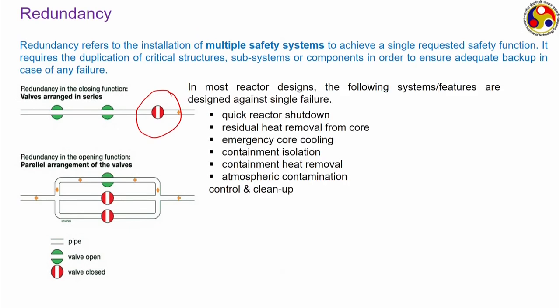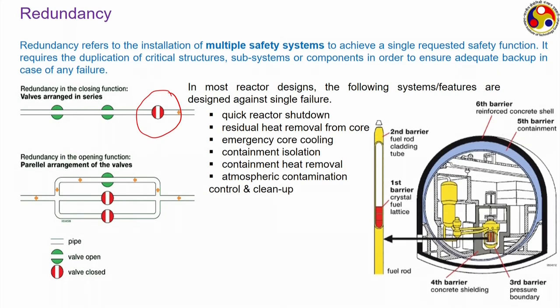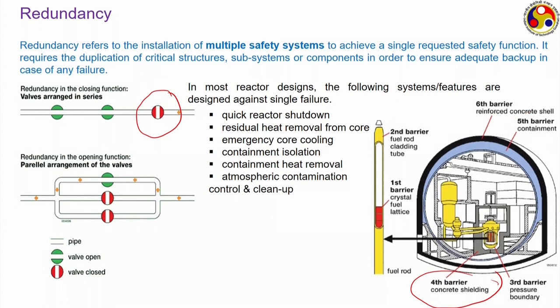In most reactor designs, redundant systems are used for quick reactor shutdown, residual heat removal, emergency core cooling, containment isolation, containment heat removal, and atmospheric contamination control and cleanup. A diagram showing the physical barriers illustrates that instead of 4 barriers, some designs have 6 — the original three plus a concrete shielding around the fuel lattice structure, a reinforced concrete shell outside, and a contamination barrier — providing additional safety layers.